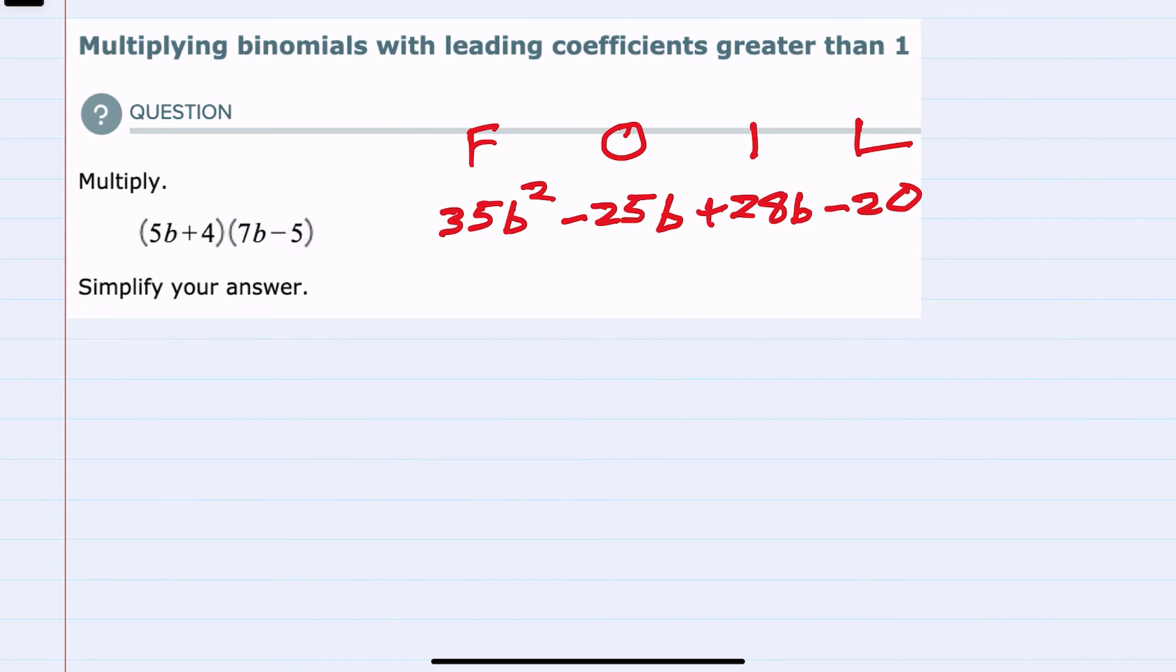But we do need to make sure that we are simplifying our answer. And to do so, we need to combine like terms. We do have two like terms here. The outer and inner both have b's.